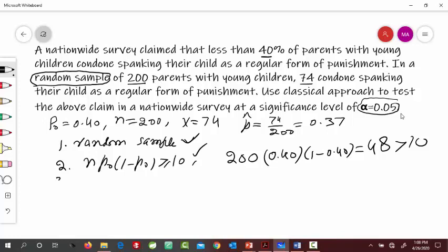Third condition is the independence of the values of this random sample. And for that the condition is that N should be less than or equal to 5% of the population size. For the parents with young children, they are in millions. So definitely 200 is less than 5% of the millions of those parents. So this condition is also true.